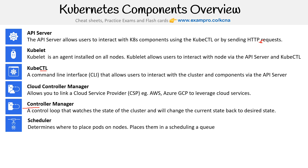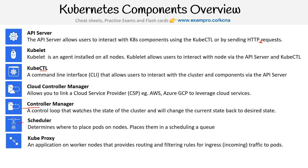We have a scheduler, which determines where to place pods on nodes and places them in a scheduling queue. That's why there's a little crane icon here — because it's picking pods up and putting them where they need to be.